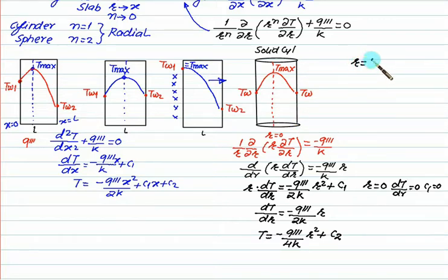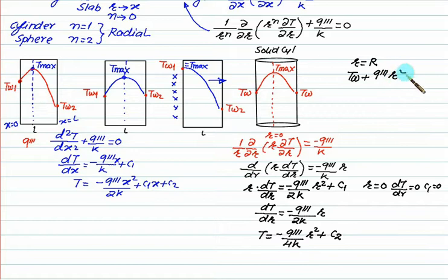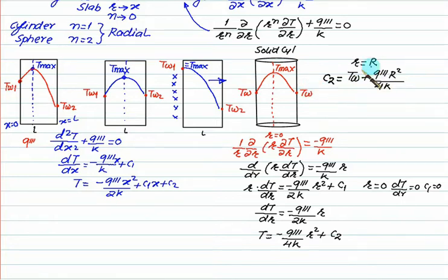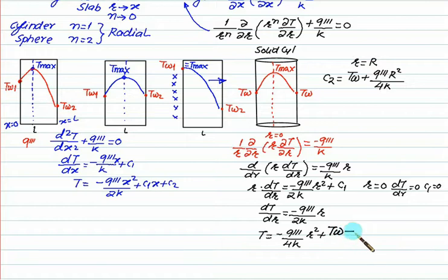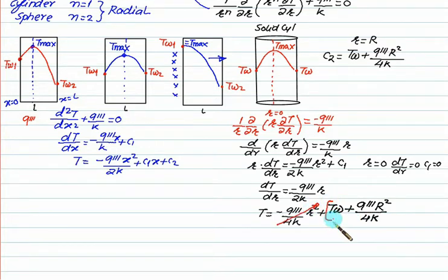Substituting C₂ back, T = −(q'''/4k)·r² + TW + (q'''·R²)/(4k). To find maximum temperature, put r = 0, so T_max = C₂ = TW + (q'''·R²)/(4k). This gives the temperature distribution and maximum temperature for a solid cylinder.